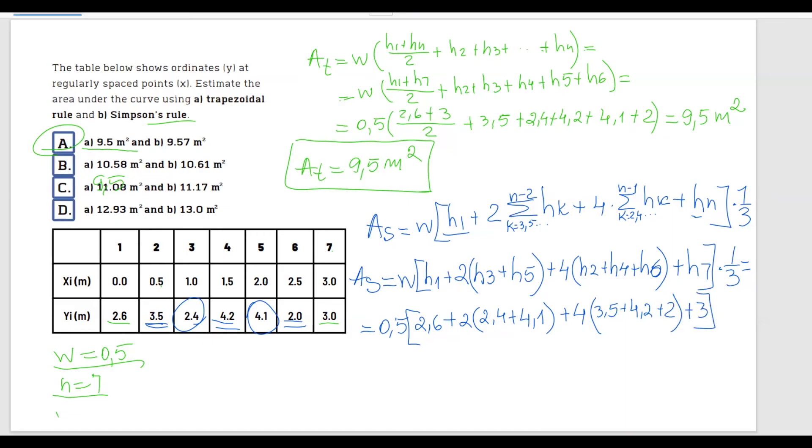Plus 4 multiplied by h2, which is 3.5, plus h4, 4.2, plus h6, 2, plus h7, which is 3. And all of this multiplied by 1 over 3.